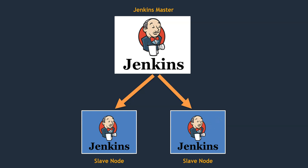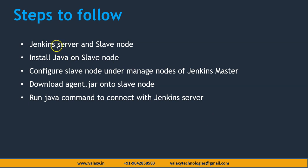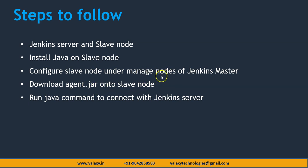Let's see the steps we need to follow. Initially, we need two systems: one is Jenkins server, which I have already installed and configured. If you are not aware how to install Jenkins server, please go and watch my previous video. We also need a slave system — this is an empty system I haven't configured. We need to install Java on the slave system because to connect with the master Jenkins node, we need to run some Java-based commands. Next, configure the slave node under managed nodes of the Jenkins master. By going to Manage Jenkins, we can find Manage Nodes and Clouds. Next, we need to download agent.jar on the slave node. Once this configuration is done, we get an agent.jar which we need to run on the slave system. We need to run the Java command to connect with the Jenkins server, and then our slave node will be able to communicate with the master node.